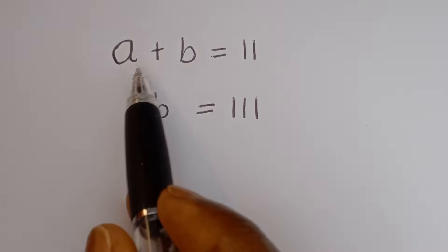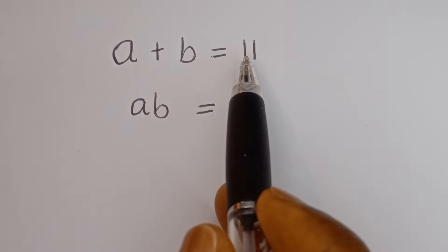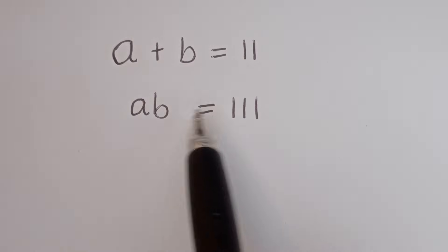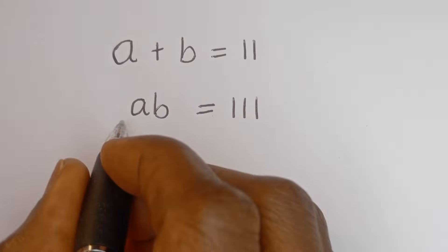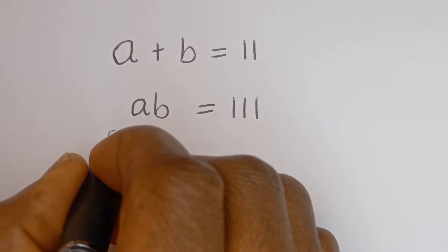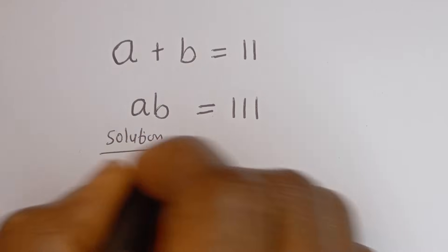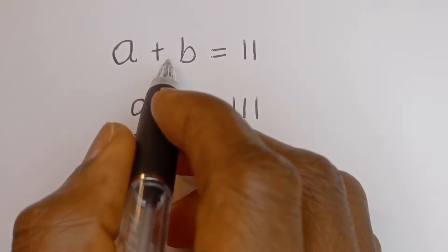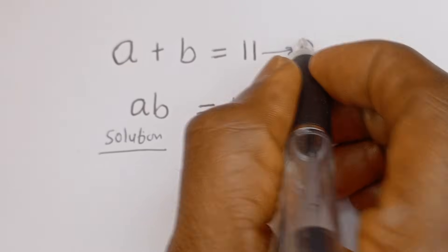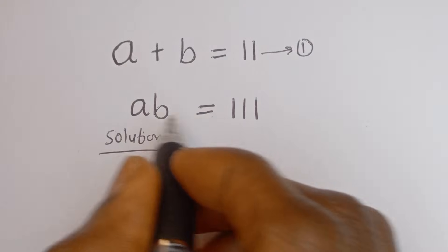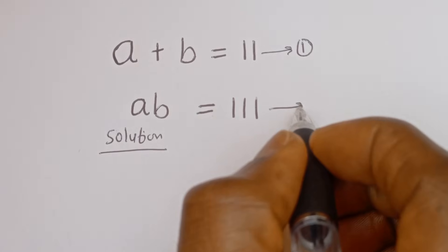How to solve for A and B in this equation: A plus B is equal to 11, let's call this equation 1. AB is equal to 111, let's call this equation 2.